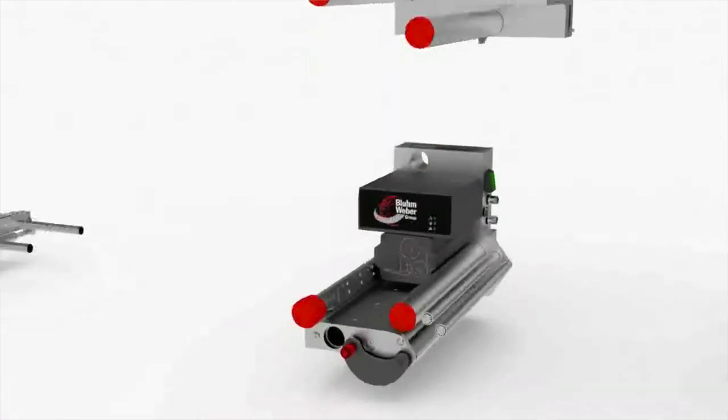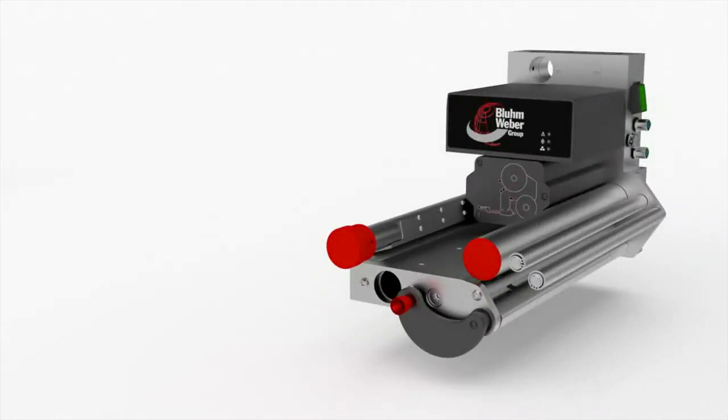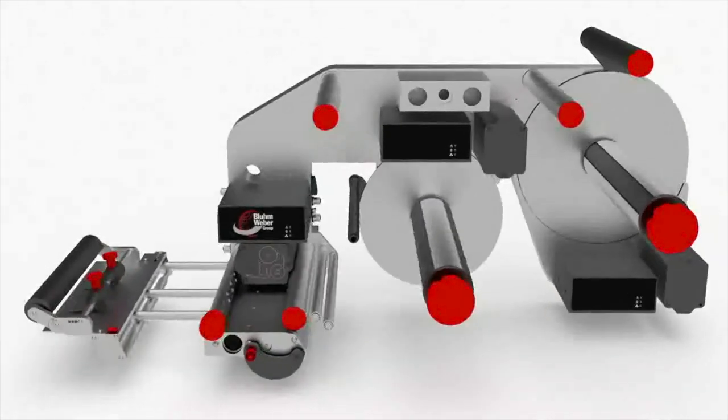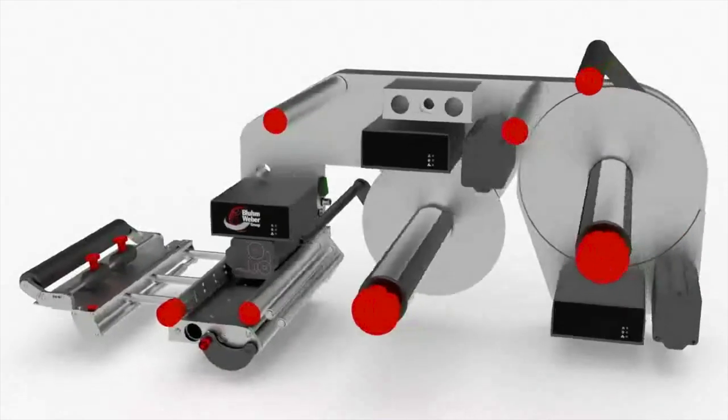The system can apply pre-printed labels quickly and accurately to products and packaging. The new high performance servo motors offer a high level of precision with increased speed.